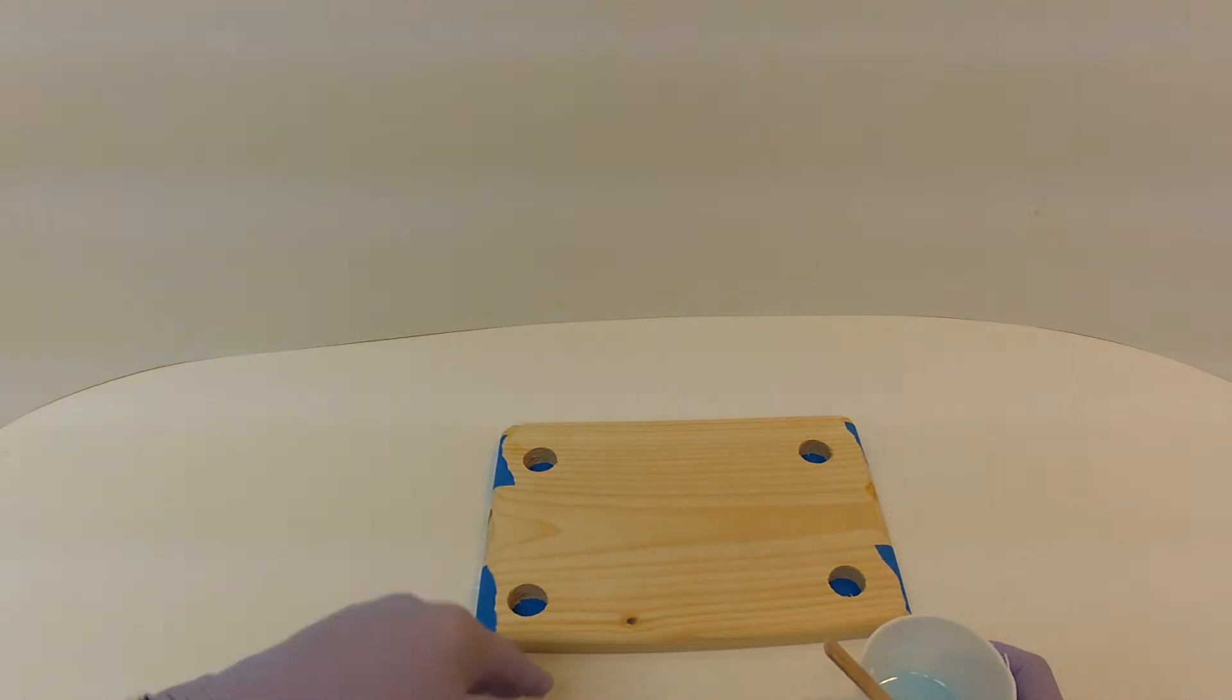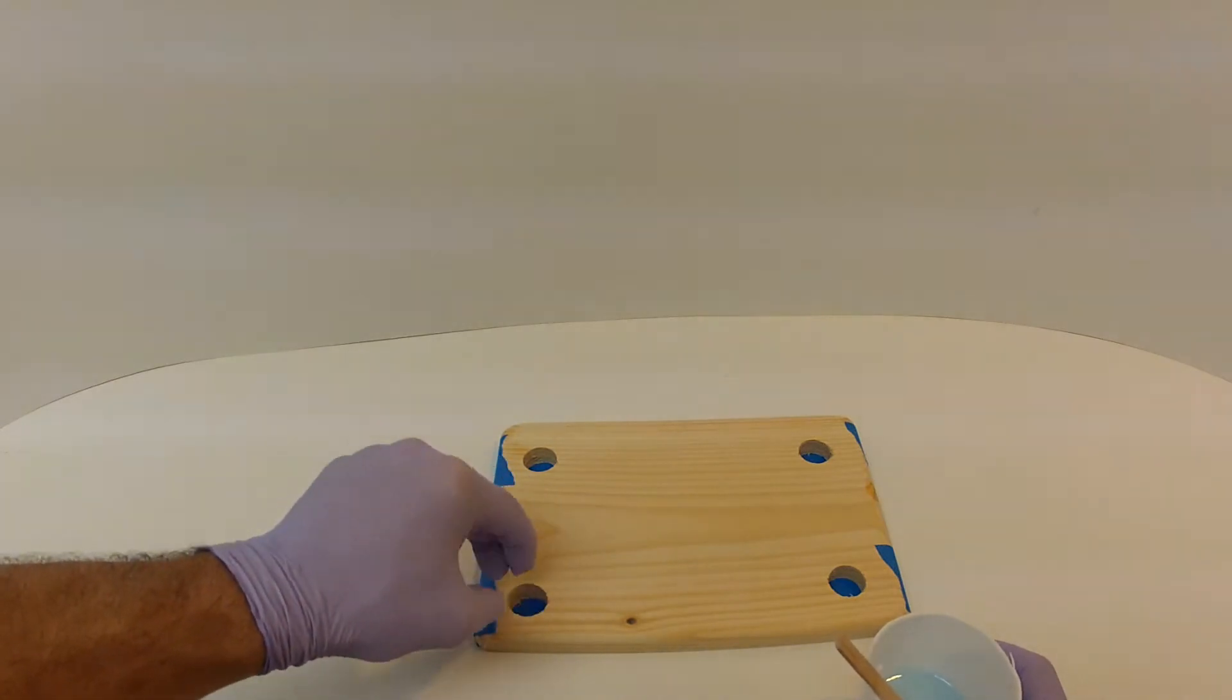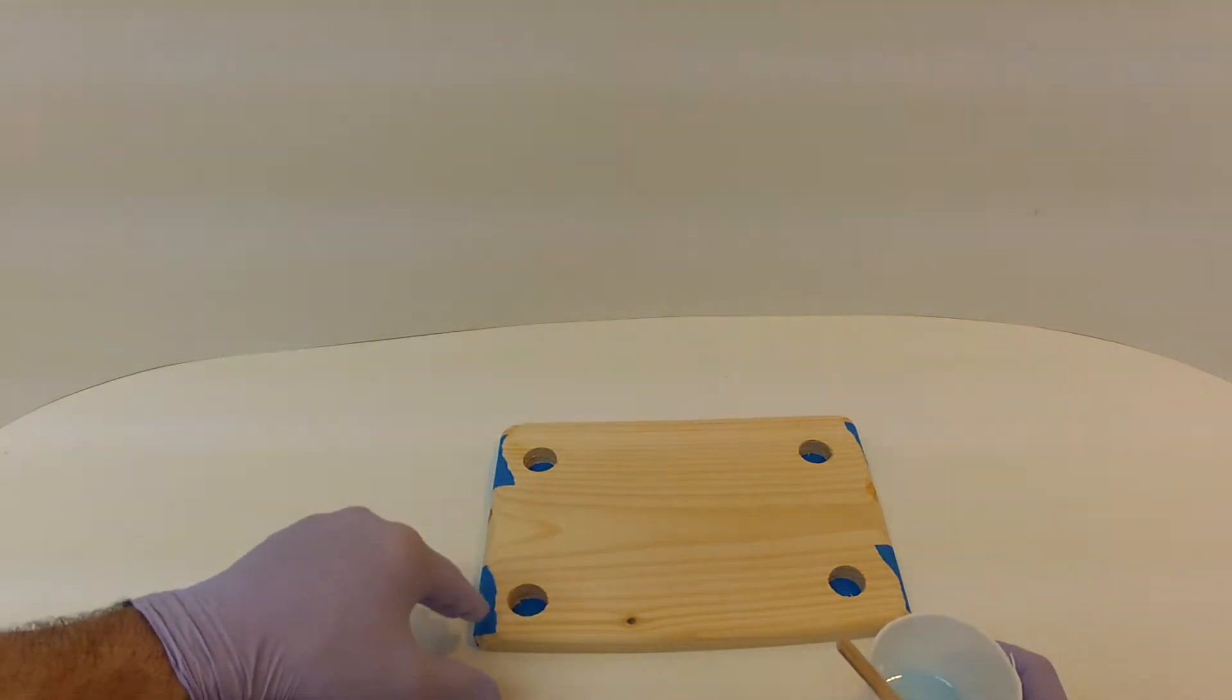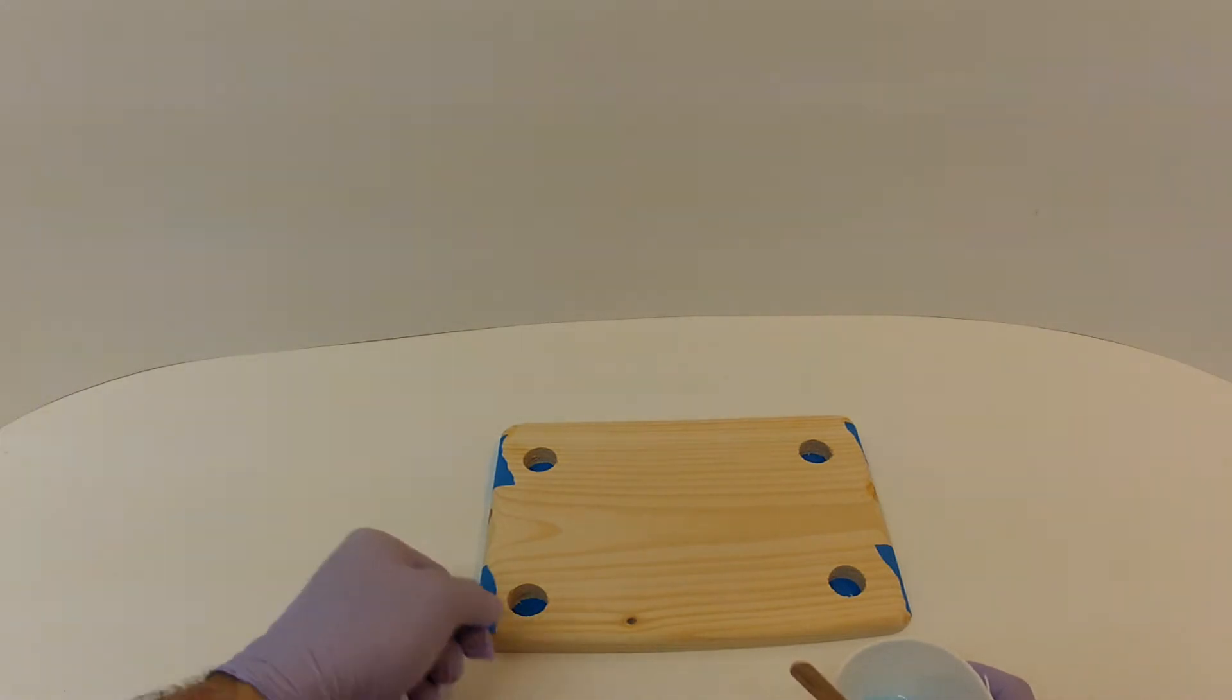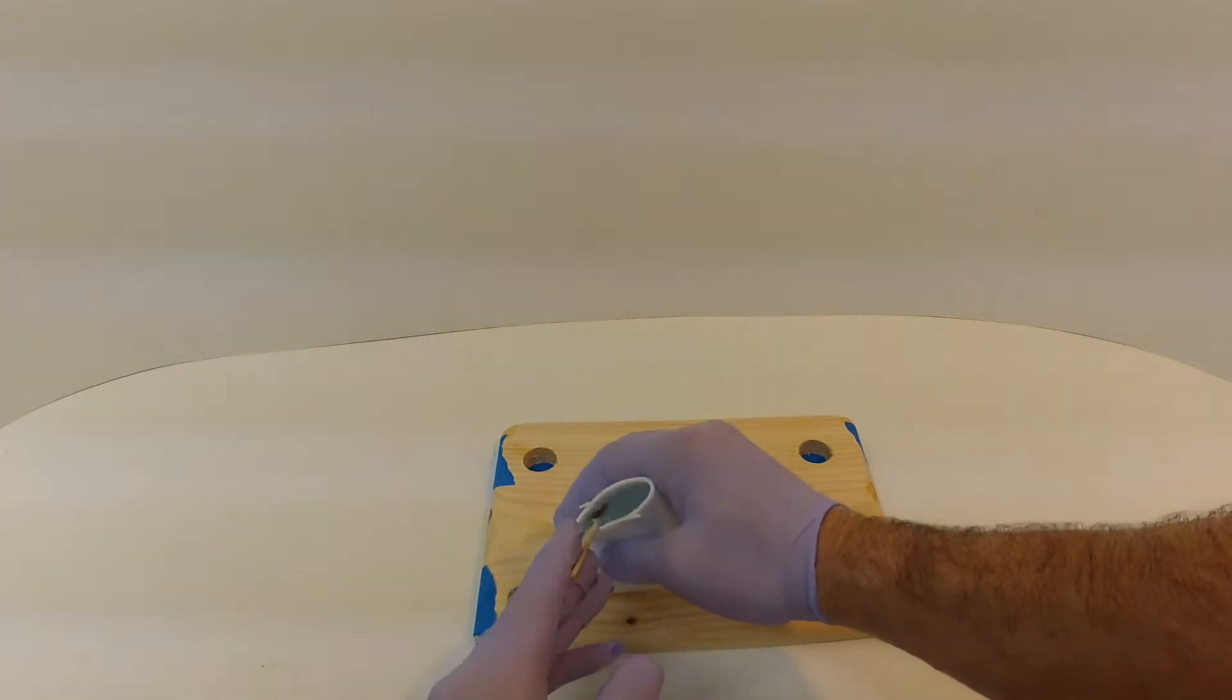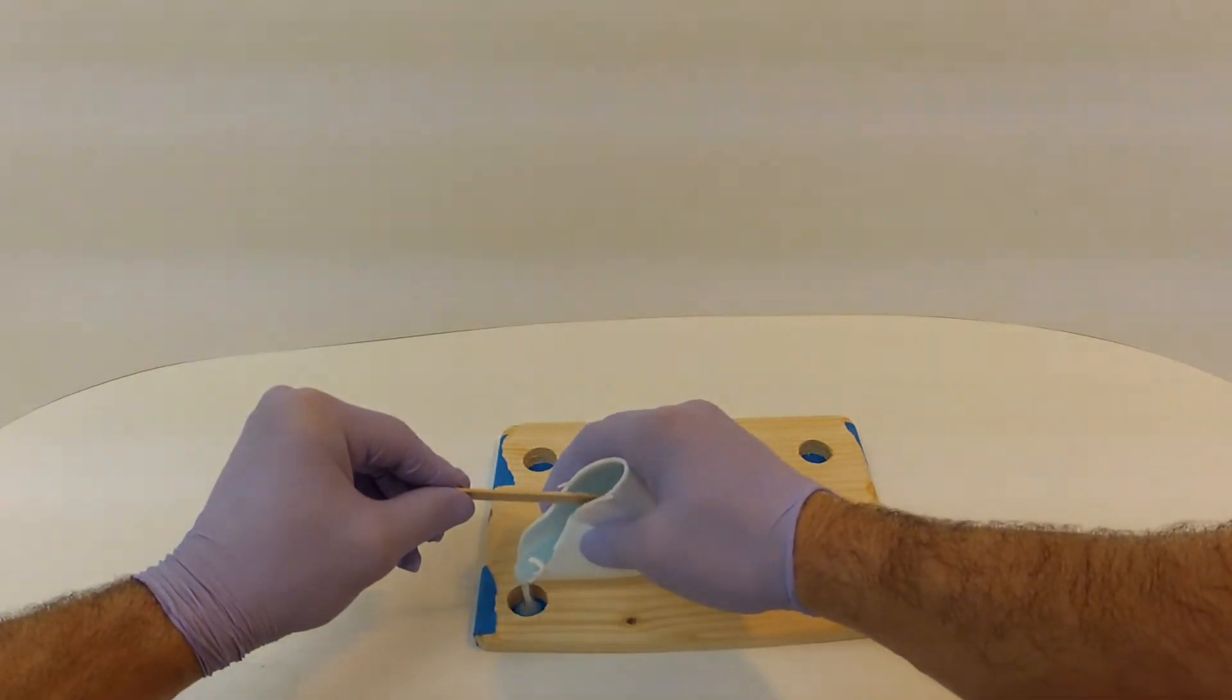The reason you don't want to do that is because when you pour, the bubbles will tend to float up and you can get a not smooth finish on the top. But there is a little technique I do to basically pop the bubbles as they float up. So just going to pour each.